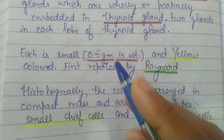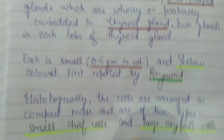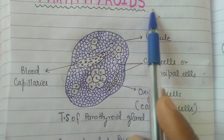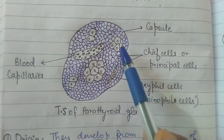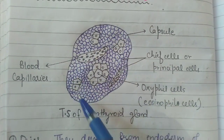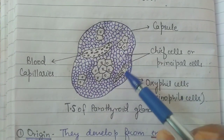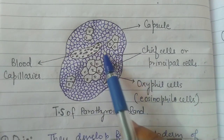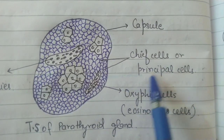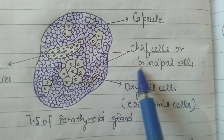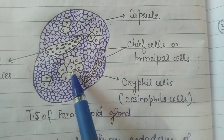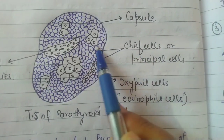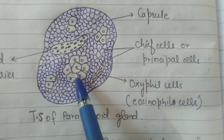If we see the transverse section of the parathyroid gland, we can observe that there are compact masses of cells present in them. There are basically two types of cells present in the parathyroid gland. The first type is the small blue-colored cells, called chief cells or principal cells. On the other hand, the large-size cells are known as oxyphil cells or eosinophil cells.